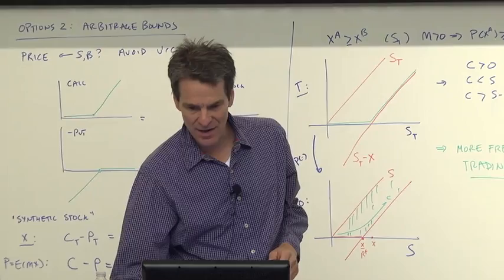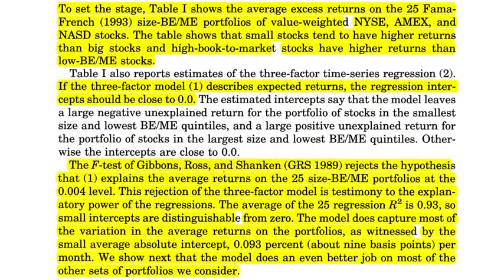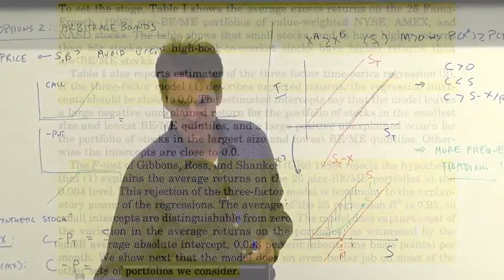What do Fama and French say about the table? Let's look at what they say on page 57. Table 1 reports estimates of the three-factor time series regression 2. If the model describes expected returns, the intercepts should be close to 0. And they say, by and large, the intercepts are close to 0. Let's look at the intercepts. That, of course, is what the model is.